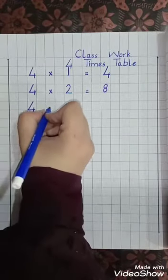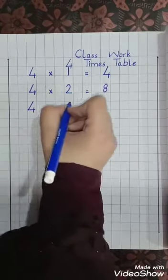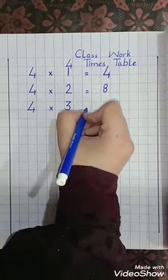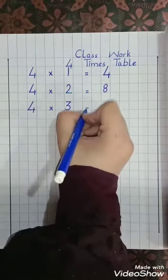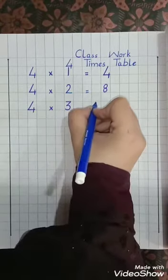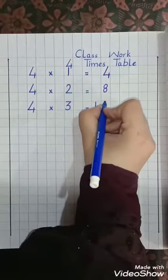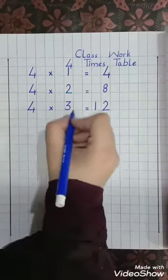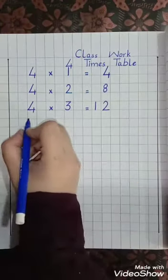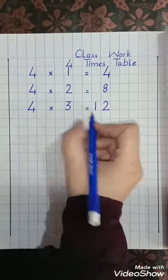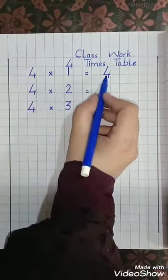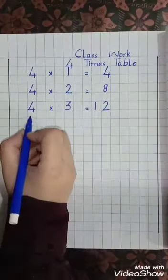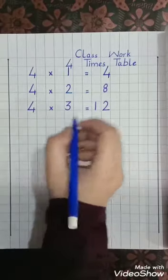Four, multiply. Two, equal lines, eight. Four twos are eight. Four twos are eight. Four ones are four. Four twos are eight. Four, multiply. Three, equal lines. 1, 2 — 12. Four threes are 12. Four threes are 12.